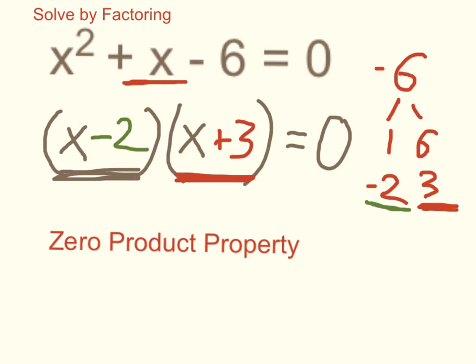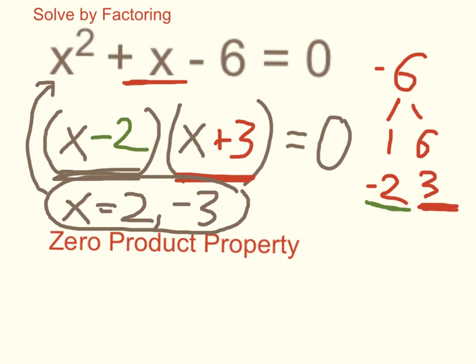x minus 2 is equal to 0 if x itself is 2, because 2 minus 2 equals 0. So one possible solution is x equals 2, or x plus 3 equals 0 when x itself is negative 3. So my two solutions to my quadratic equation are x is equal to 2, or x equals negative 3.